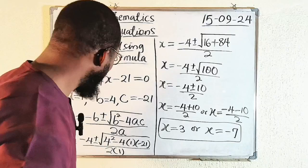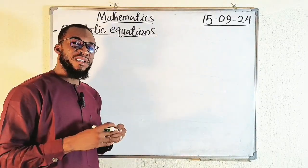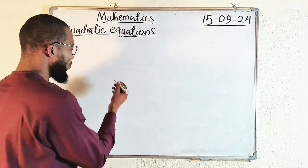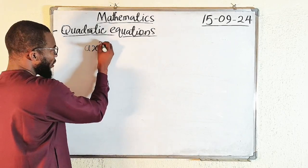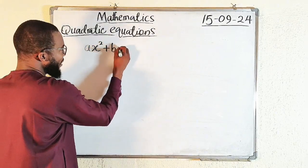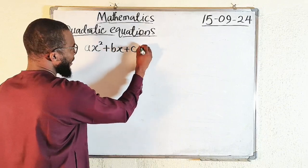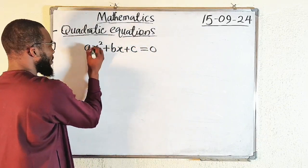So let me wipe the board. The first thing you should remember is the general form of a quadratic equation, which is ax² + bx + c = 0. Remember this.